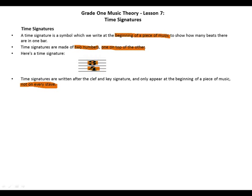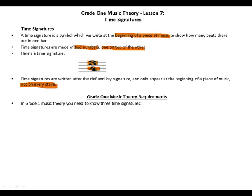In Grade 1 music theory, you need to know three time signatures: 2/4, 3/4, and 4/4. These are the only three time signatures you need to focus on for Music Theory Grade 1.